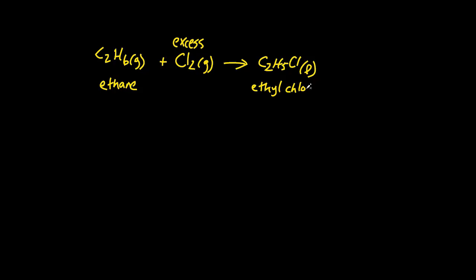So let's say we had a problem where this formula is given for ethane and it's reacted with chlorine gas, which they state is in excess, to yield C2H5Cl liquid, which is ethyl chloride, plus HCl gas.